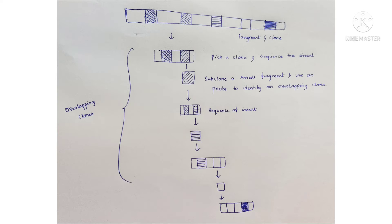Using the clone, prepare a probe and identify other colonies which have overlapping sequences — one end of the clone is subcloned. The subclone fragment of the selected clone may be hybridized with the other clones in the library, and the second clone hybridizing with the subclone of the first clone is identified due to the presence of overlapping regions.